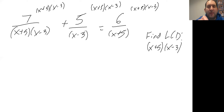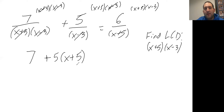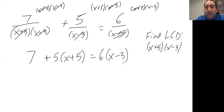Now we can start canceling. You'll see the pattern: you end up multiplying by whichever binomial is not in that fraction's denominator. X plus five in the numerator cancels with the bottom, X minus three in the numerator cancels with the bottom — so seven times the canceled terms leaves just seven. Then for the next fraction, the five over (X − 3): X minus three cancels, leaving five times (X + 5). For six over (X + 5): X plus five cancels, leaving six times (X − 3).